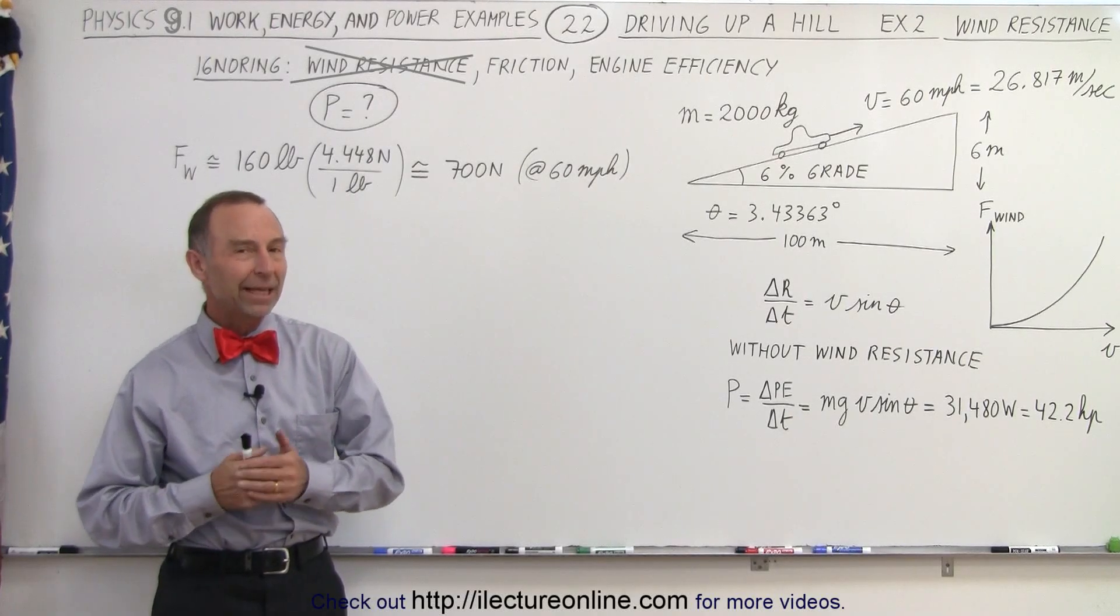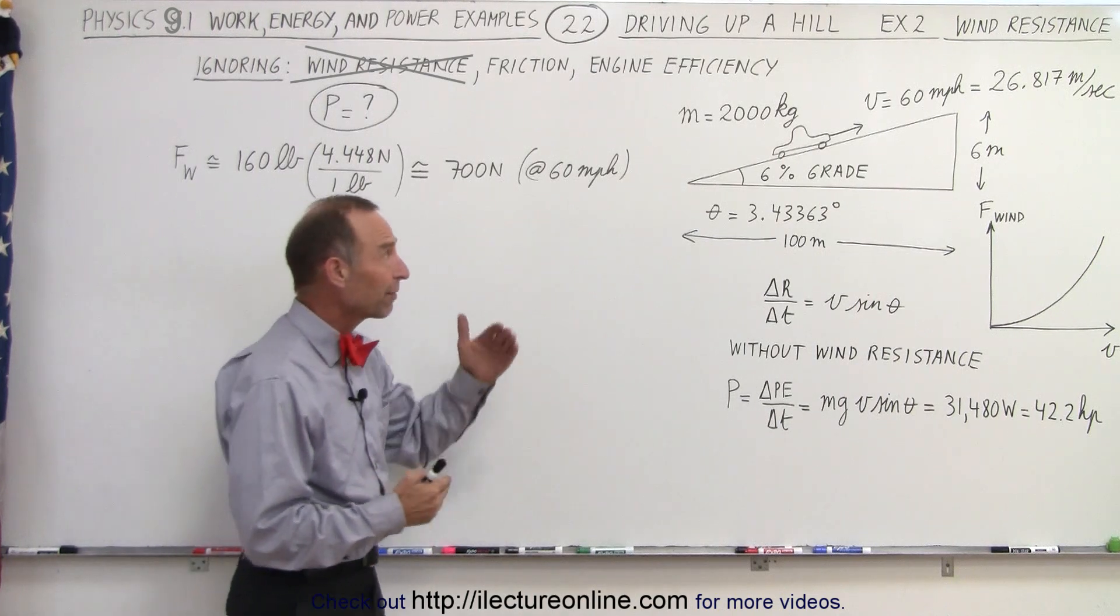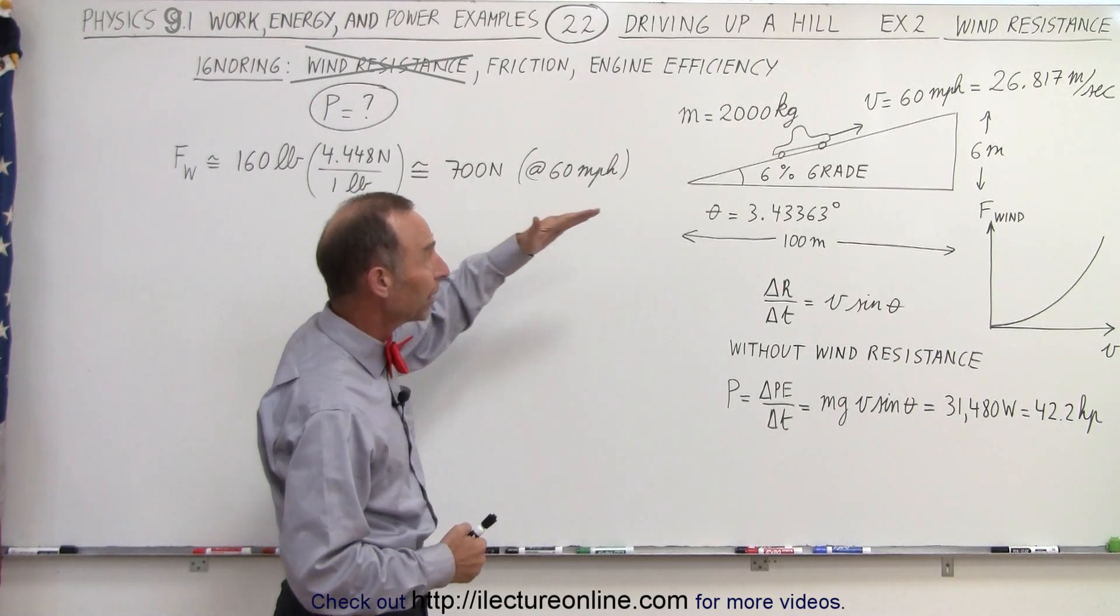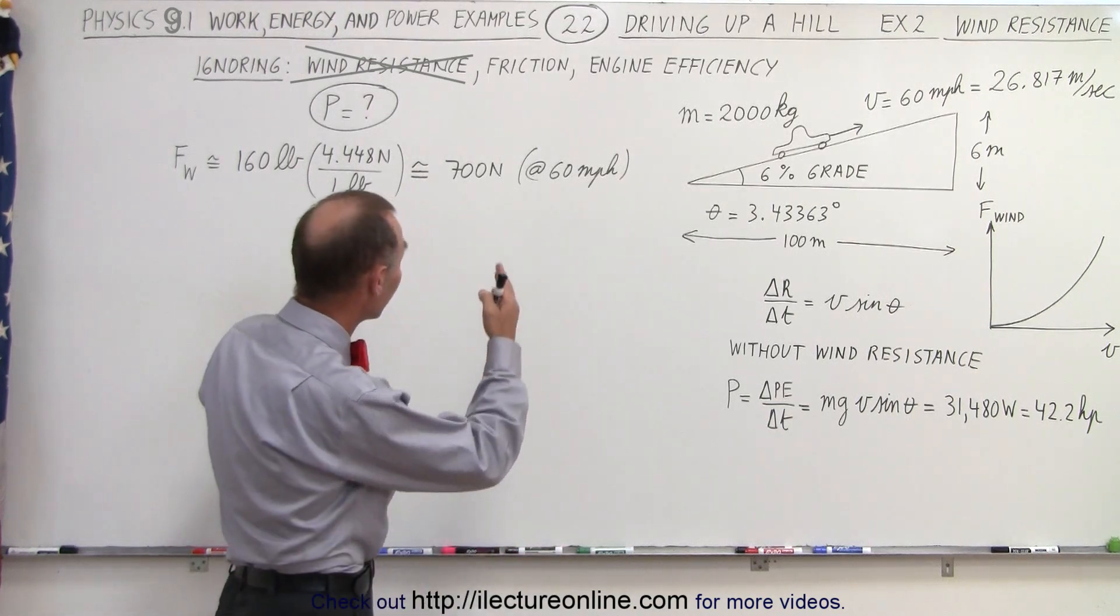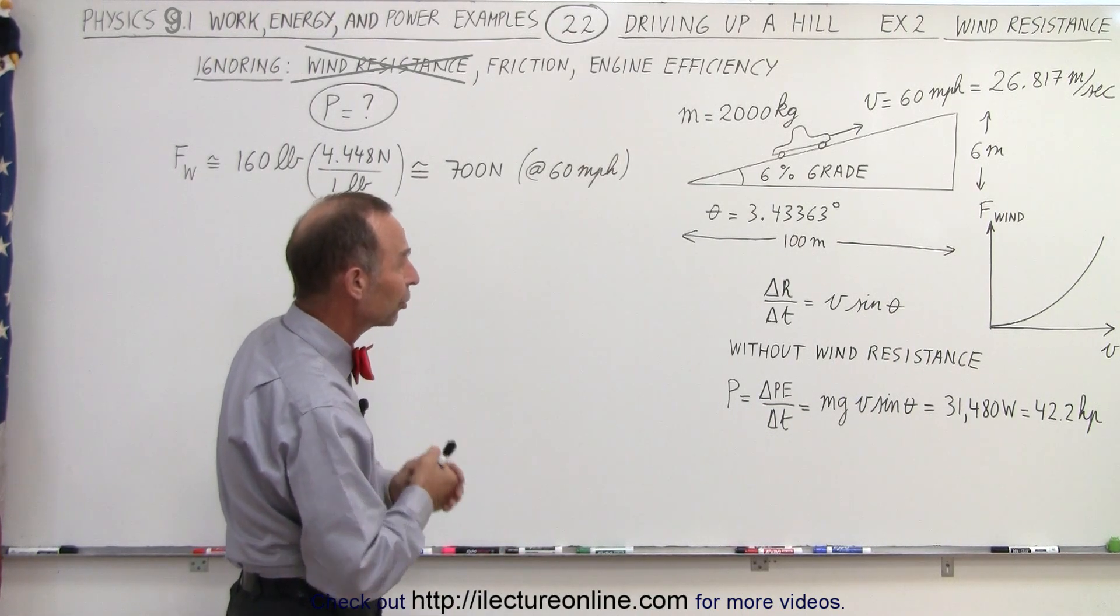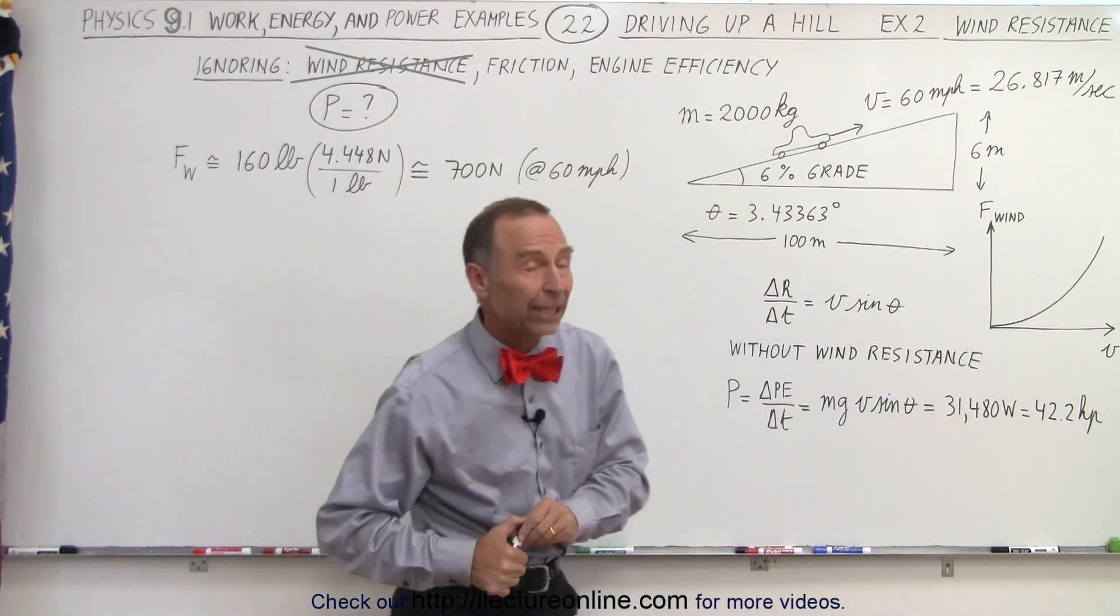Welcome to iLectureOnline. In the previous video, we found that the amount of power required to drive a 2,000 kilogram car up a hill, ignoring all the wind resistance, internal resistance, friction, and efficiency, took about 42.2 horsepower, which is 31,480 watts.